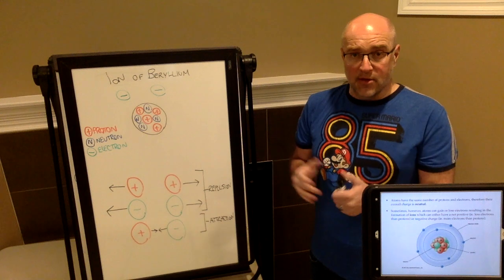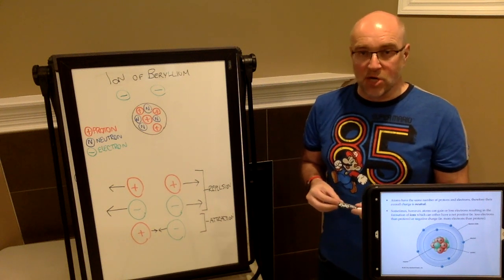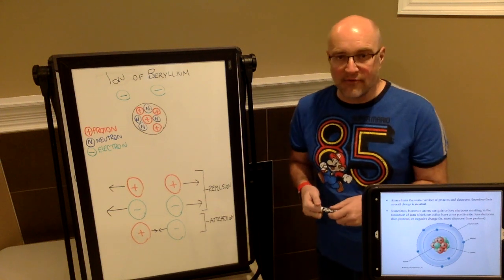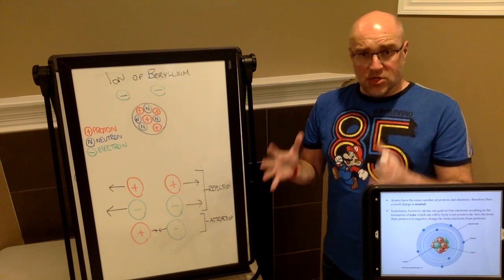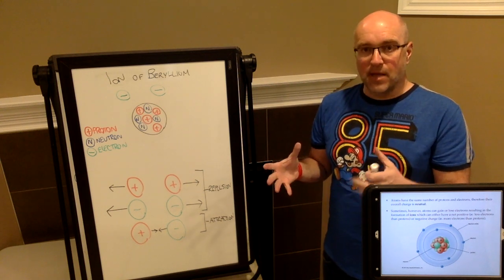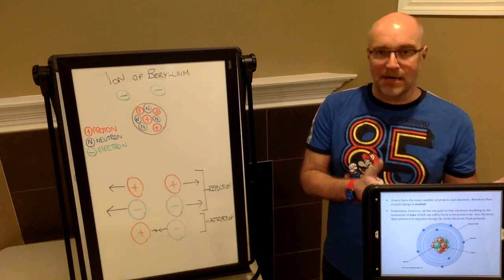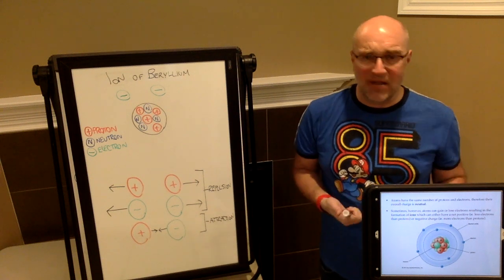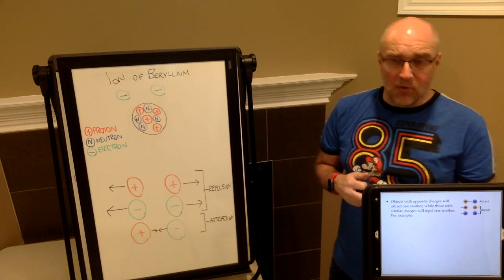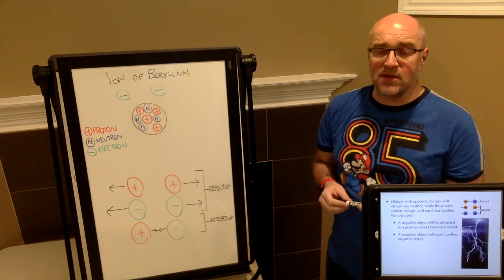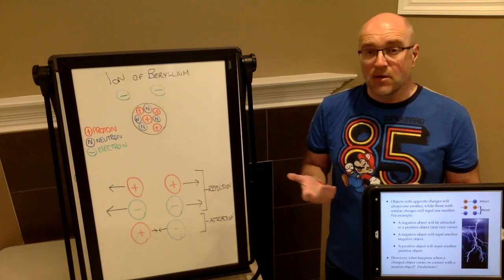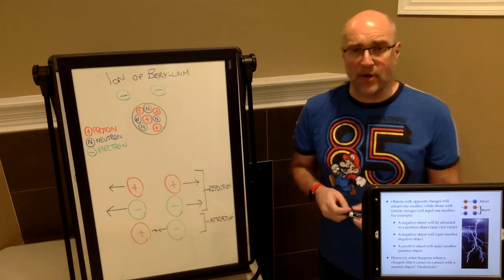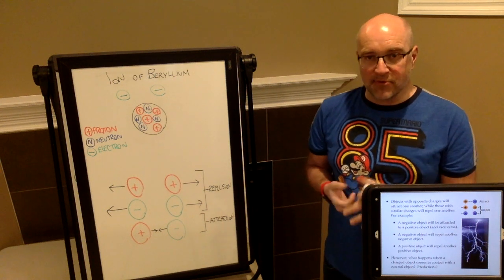Remember that non-metals are going to be forming anions which are negatively charged. For example, if you had chlorine, chlorine would actually gain an electron to get that negative 1 charge. You can take a neutrally charged atom and make it charged by either adding or removing electrons. Now, what we should discuss are the interactions between these positive and negatively charged substances.